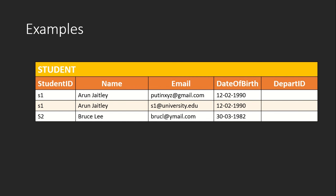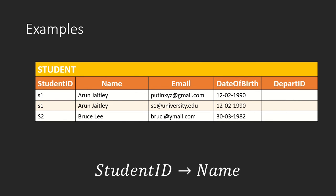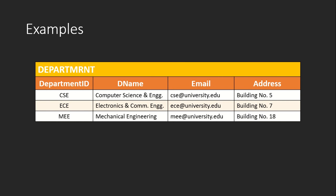Look at this example: we have a student table with attributes student ID, name, email ID, date of birth, and department ID. We can have a functional dependency: student ID → name, meaning name can be identified by student ID. Here we call name as dependent — name is dependent on student ID.